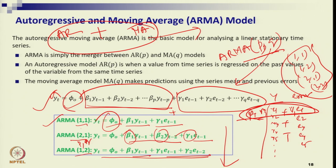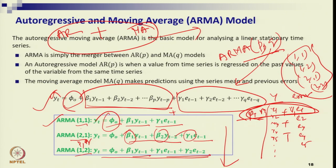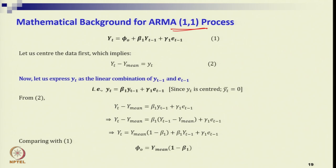Let us understand through illustration. First, understand the mechanism of the ARMA process. Let us restrict our discussion to ARMA(1,1). If you understand that, you can extend to ARMA(1,2), (2,3), or any (P,Q) process using Python or ready-made software. The model is a linear combination — AR process and MA process both come together in ARMA.